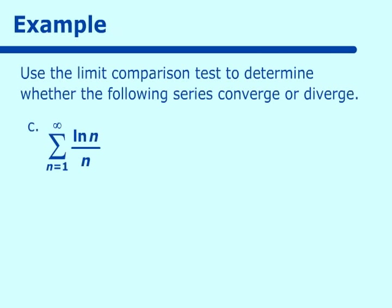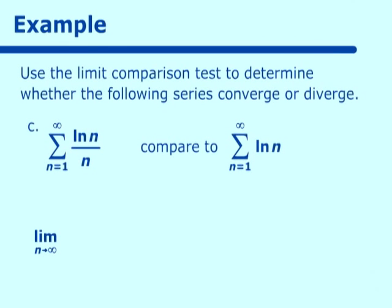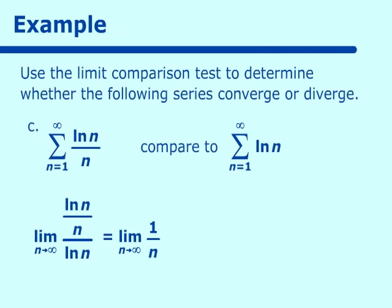Next: ln of n over n. We know that 1 over n is divergent and ln of n will certainly grow as well, so let's compare it to ln of n. We compute the limit as n approaches infinity of (ln n / n) over ln n. That equals the limit as n approaches infinity of 1 over n, which approaches 0. Since ln of n we know to be divergent, our series is divergent too.